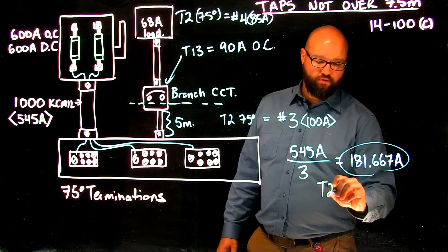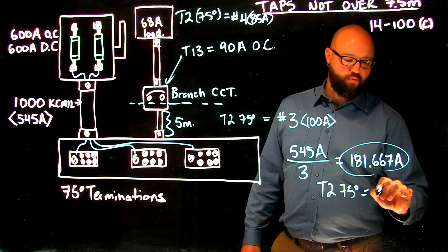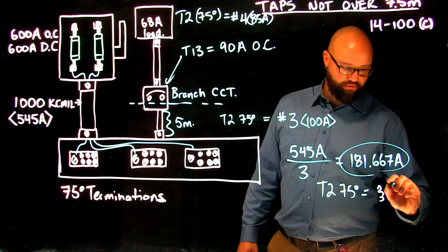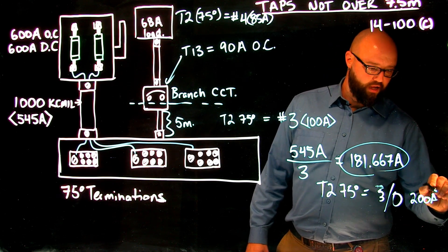So we go to table two, 75-degree column, and it turns out that we actually need to go with a 3-aught good for 200 amps.